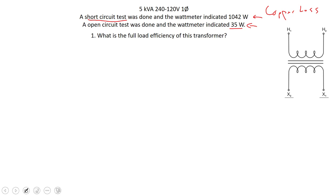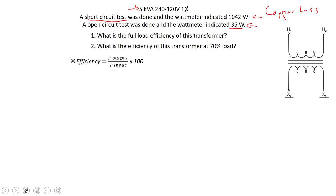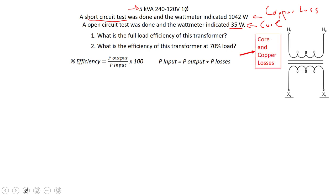What we're going to try calculating here is the full load efficiency of this transformer — loading it up to the full 5kVA. Then we'll redo this at 70% of that load. The efficiency formula is: percent efficiency equals power output divided by power input, and power input is power output plus losses. We've got two types of losses: core losses and copper losses. The short circuit test gives us copper losses; the open circuit test gives us core losses.